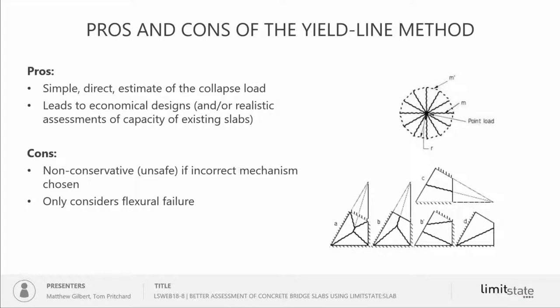The downside is that if you choose the wrong mechanism, you overestimate the true collapse load. Other cons are that it only considers flexural failure — it doesn't consider shear failure, for example. And it doesn't include any consideration of the situation prior to collapse — it doesn't give you serviceability deflection predictions.